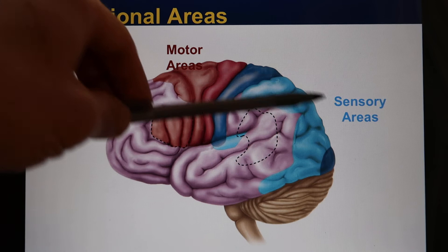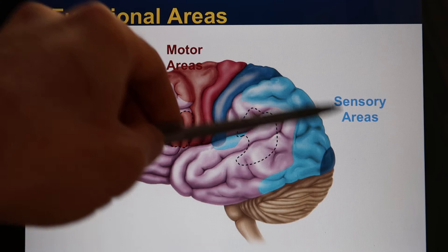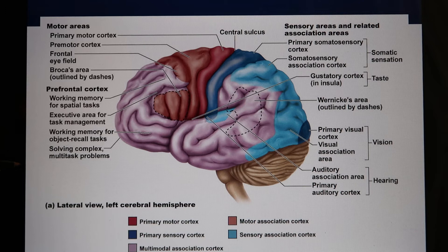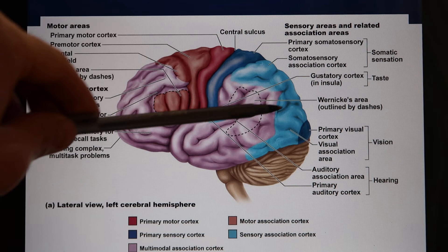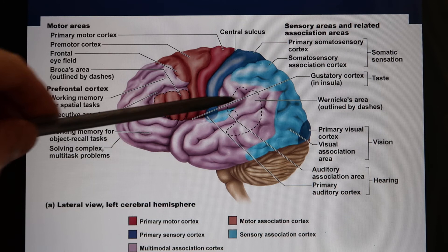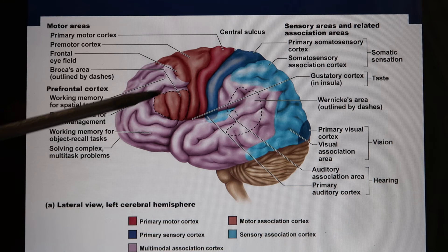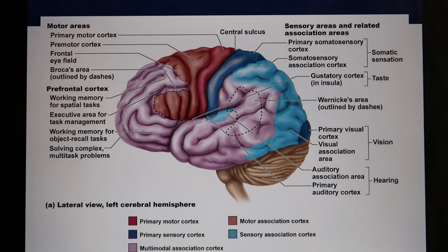The cerebral cortex is divided into sensory areas, motor areas, and association areas. The occipital lobe is where visual function is located. The temporal lobe handles auditory processing. The parietal lobe is mainly sensory, including the somatosensory area. The frontal lobe has two functions: motor control and high-level reasoning.